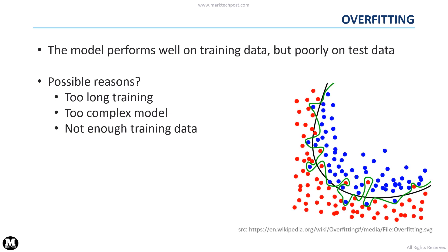In this figure, we can see an example of binary classification. We consider a classifier that has to detect if an example belongs to the blue class or to the red class. All the dots are examples of the training set. The green line represents an overfitted classifier that fits too closely to the training data. The black line represents instead a regularized classifier that is not perfect on the training data, but better generalizes the classification also for unseen data.